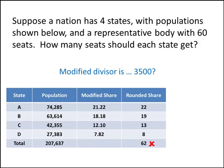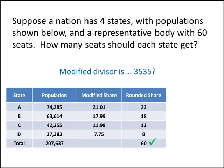So we're playing a guessing game, trying to narrow in on a number that will give us rounded shares adding up to exactly 60. After a little bit of playing around, what we might find is that a modified divisor of 3535 actually works out. We divide the population of each state by 3535, take those modified shares, round them all up, and when we add them up we get 60 seats. So that's Adams' method.